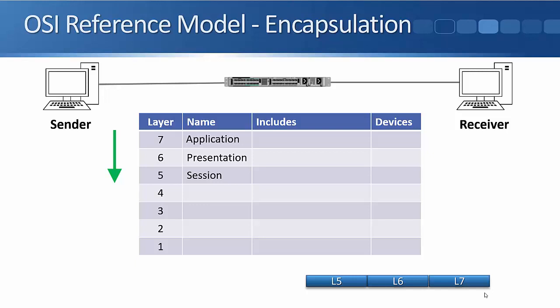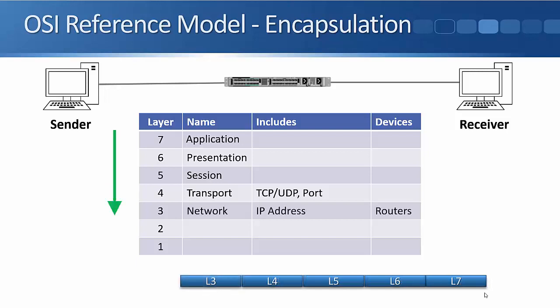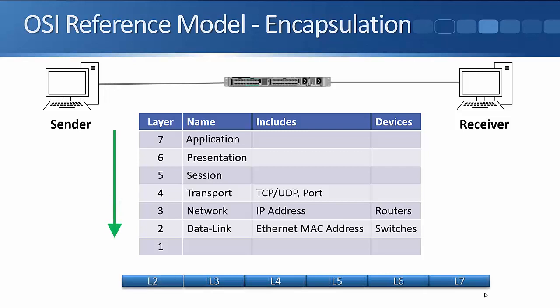When a sender sends traffic, it composes the packet starting with layer 7 information, which gets encapsulated in the layer 6 presentation layer header, then the session layer header. The packet then gets encapsulated with the layer 4 header — either a TCP or UDP header — with port information. That then gets further encapsulated in the layer 3 header, which is the subject of this section. The main information in the layer 3 header is the IP address information. Our network infrastructure device at layer 3 is the router. The layer 2 header — the data link header — on a LAN uses Ethernet, with source and destination MAC addresses. Network devices at layer 2 are our switches.